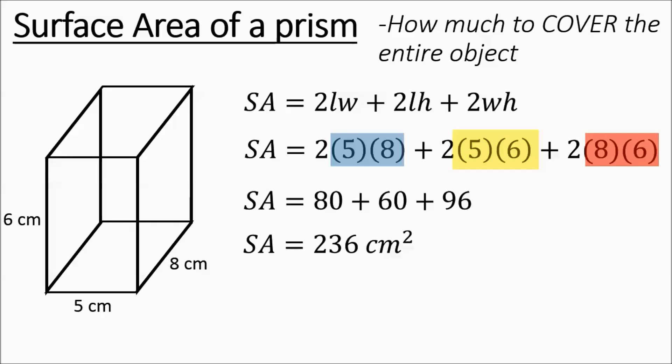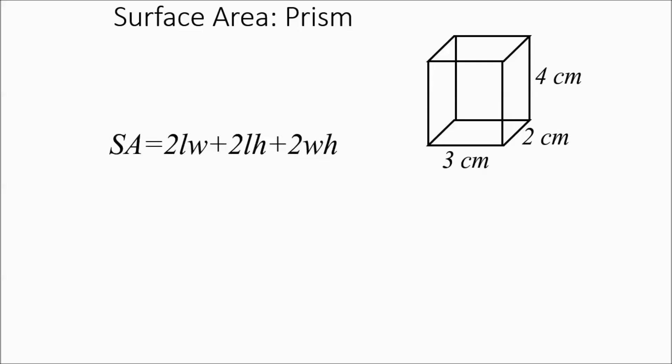So that's surface area. We're going to do one more example of surface area. So we've got a box or a prism, rectangular prism. Here are the measurements. And here is the formula.